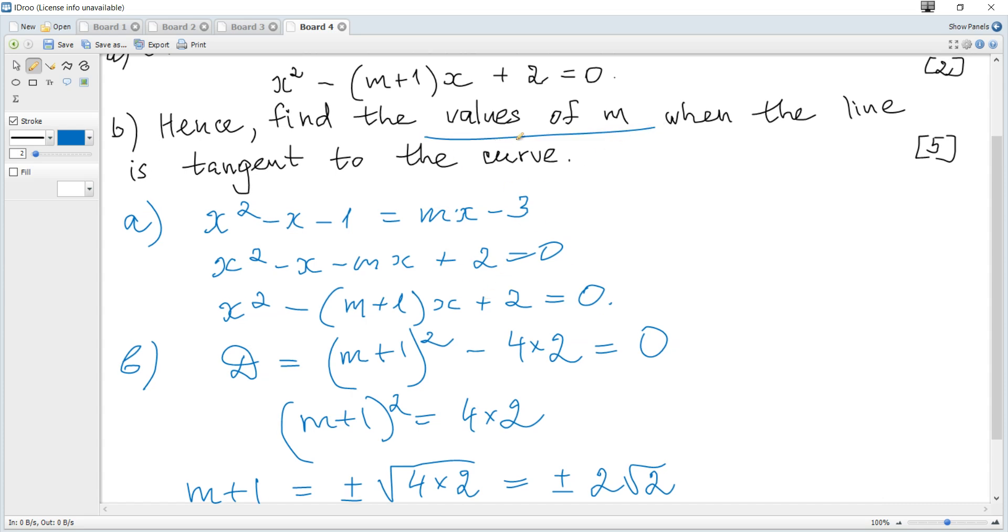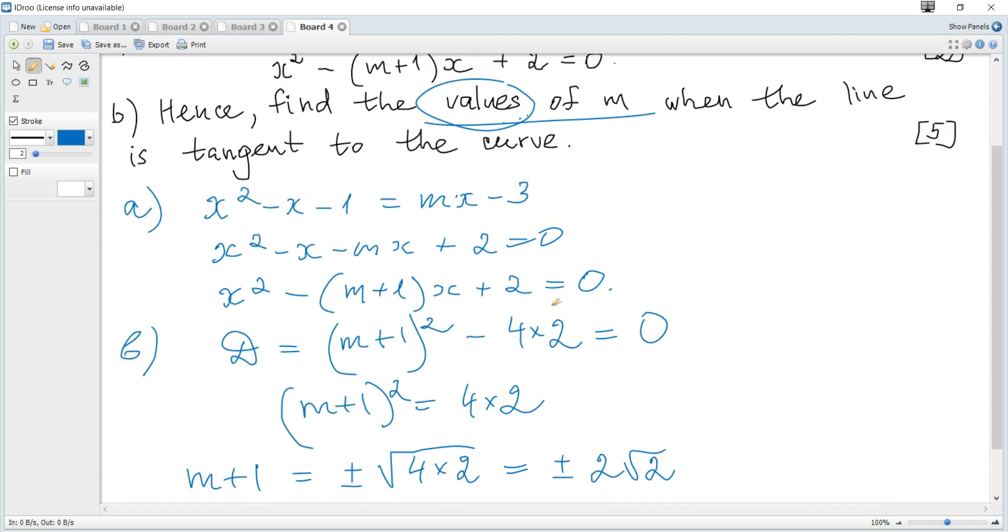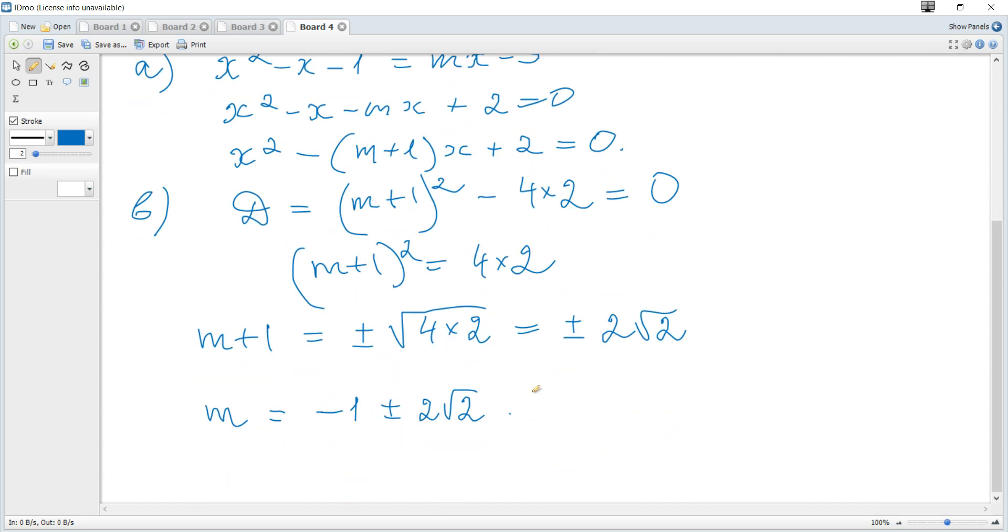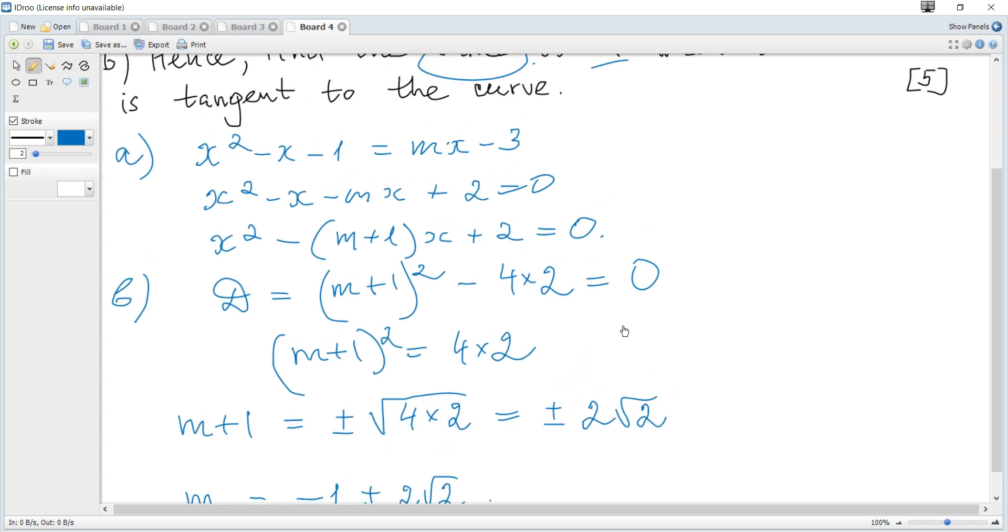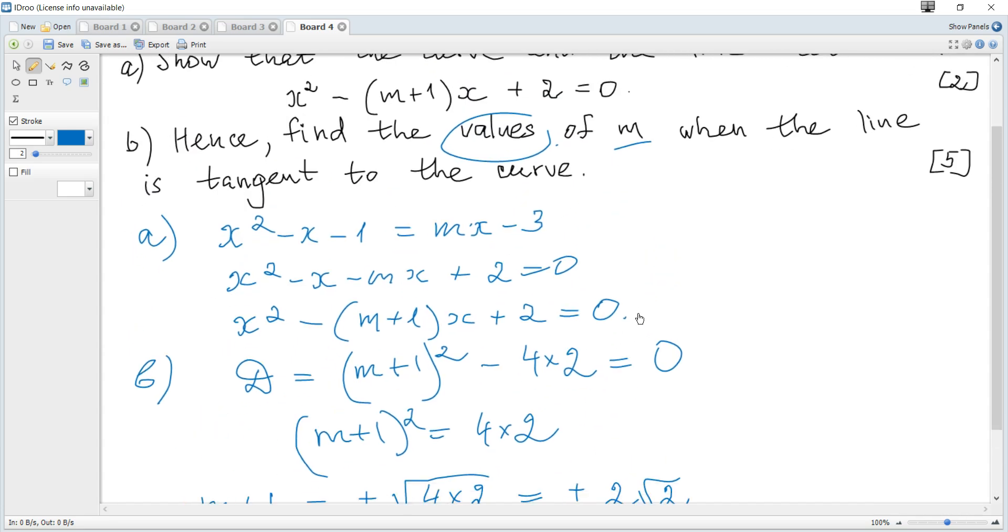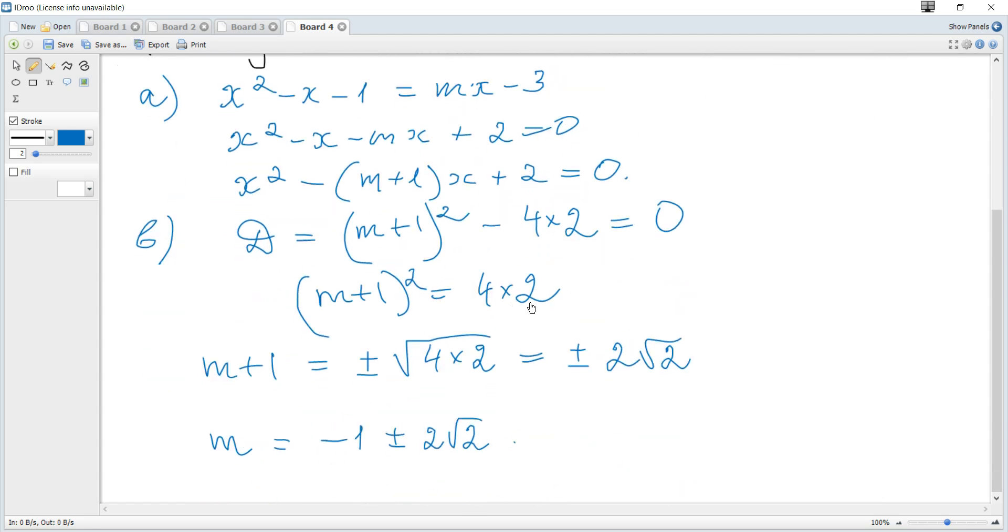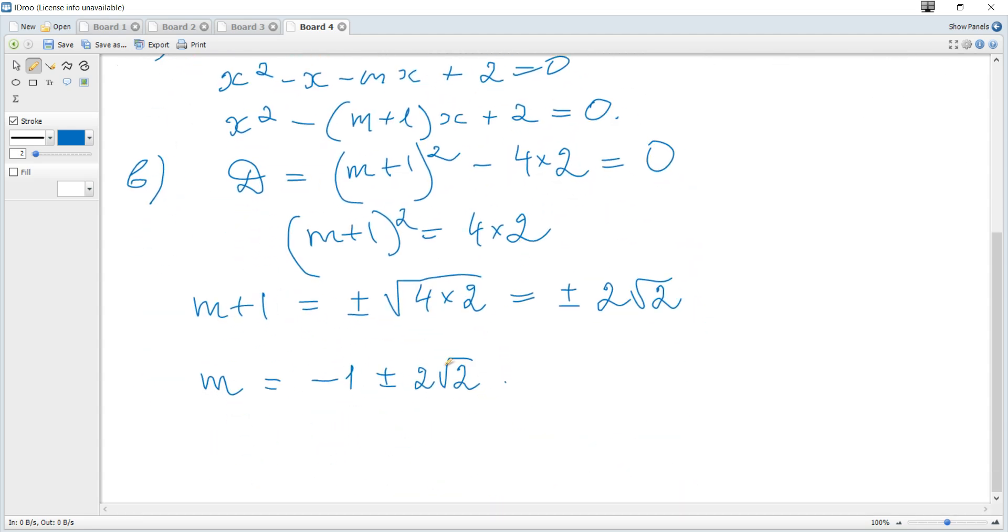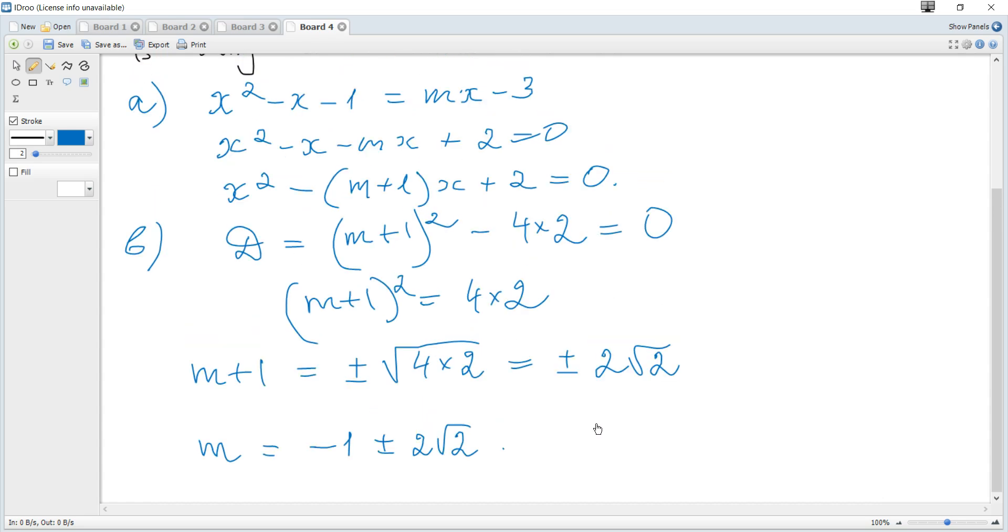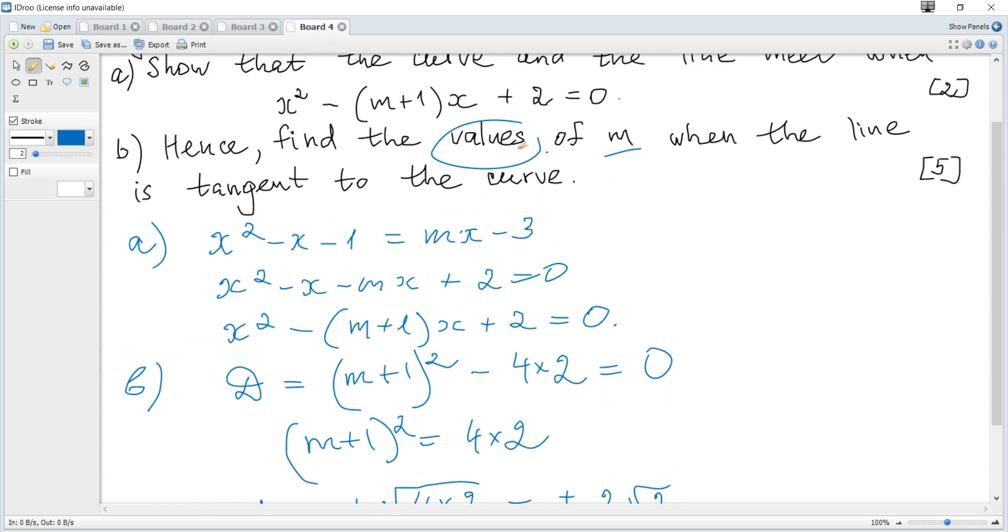Values - if it is given 'values' it means there are more than one value. It cannot be written 'values' and you get only one value of m. Or if it is given 'find the value' and you get more than one solution, it means that if it is given 'value', definitely there is only one solution.